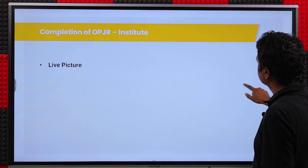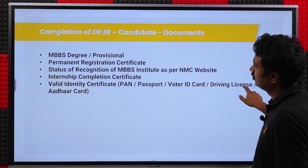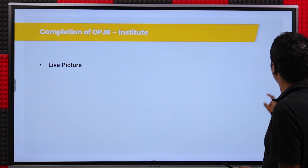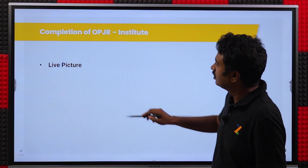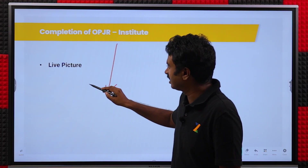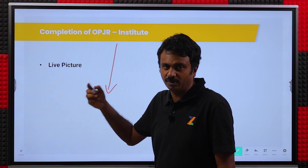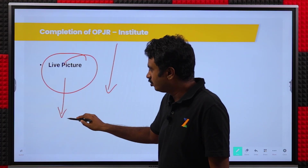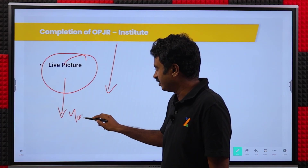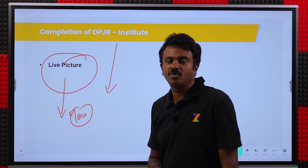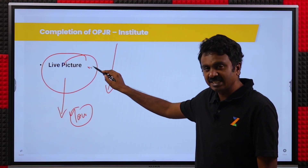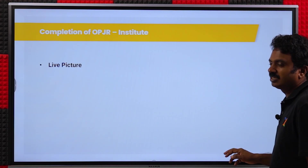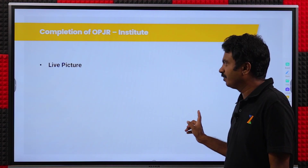From your login, those are all the things the candidate has to do as far as OPJR is concerned. The institute also has a set of processes — they will verify what you have uploaded. The main part from the institute side is the live picture, for which you have to be physically present. Don't leave the institute for a few days without completing this. However, if the institute wishes, this can also be done at a later point in time.